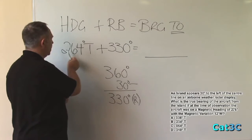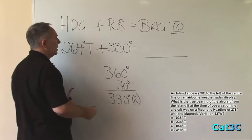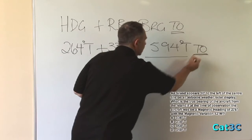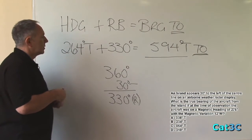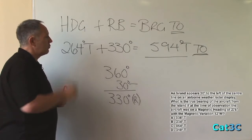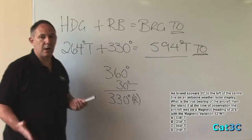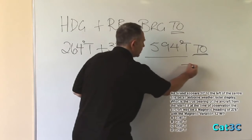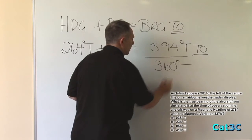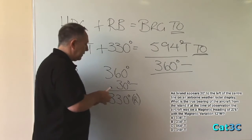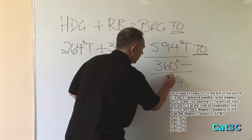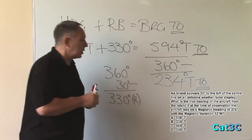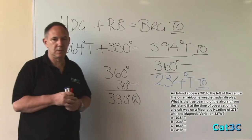Heading plus relative bearing, 264 plus 330 gives us a bearing to of 594 degrees true. And that is to the island. So, the bearing to the island is 594 degrees true. Of course, we can't have 594 degrees because 360 degrees is the maximum. So, to convert this, we have to subtract 360 degrees from 594. Leaving us with 234 degrees true to the island. Now, you will notice that 234 degrees true is one of the optional answers. But remember, this is the bearing from the aircraft to the island.